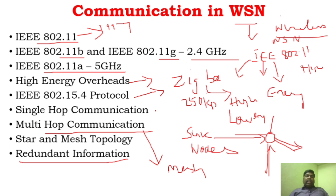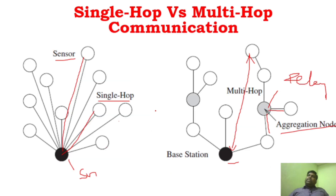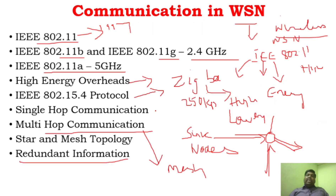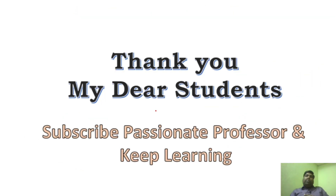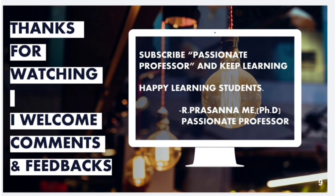So this is very important in wireless sensor networks. As we progress through different units, you need to understand for each application what topology is used and what communication is preferred in WSN. To summarize, single-hop communication uses star topology, and multi-hop communication uses mesh topology. Today we have seen communication in WSN, the IEEE 802.11 standard, the Zigbee IEEE 802.15.4 standard, what single-hop and multi-hop communication are, and the challenges and drawbacks of multi-hop communication. Thank you, students. Subscribe to Passionate Professor and keep learning. Thank you very much.